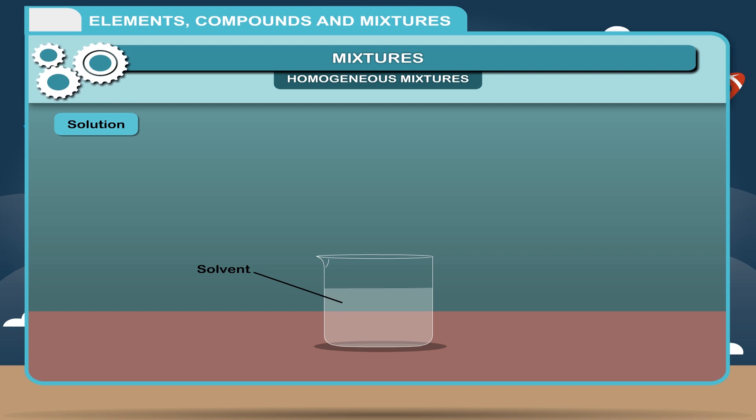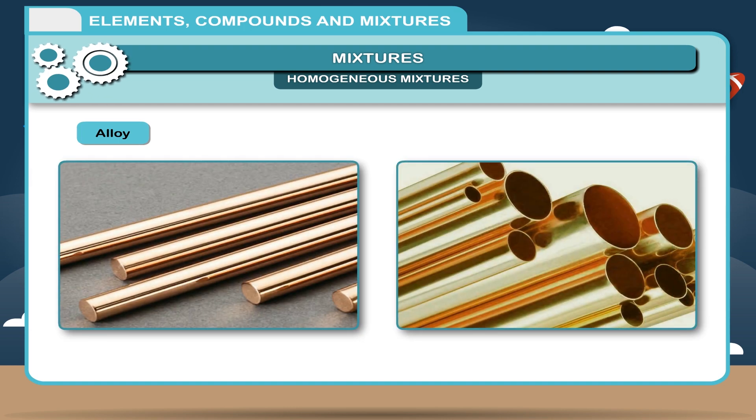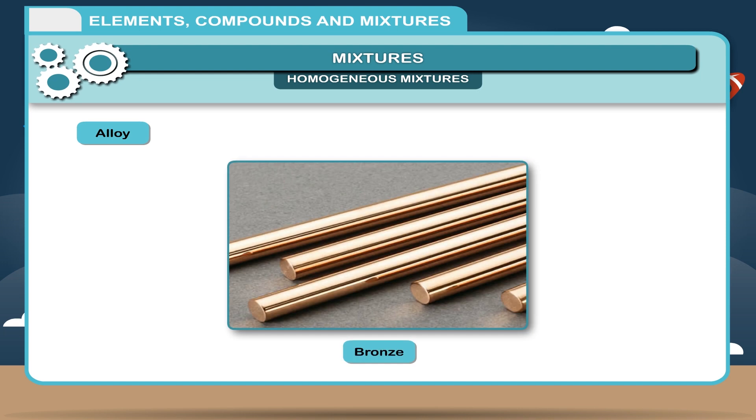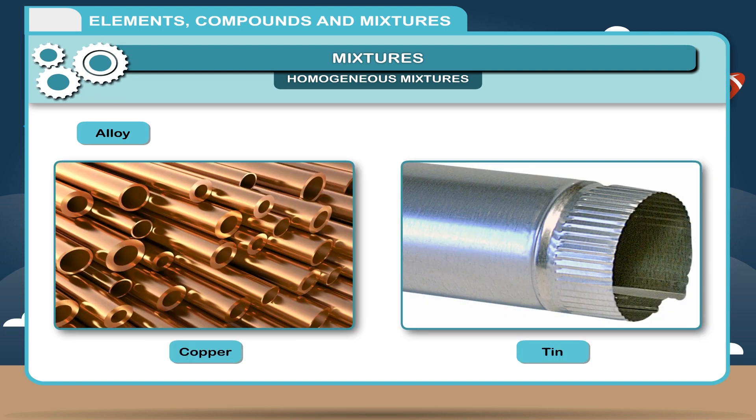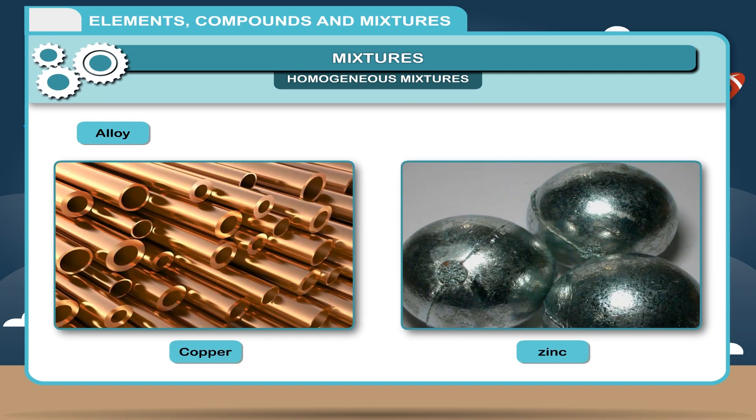Alloy: A homogeneous mixture of two or more metals, or a metal and a non-metal, is called an alloy. For example, bronze is an alloy of copper and tin. Brass is an alloy of copper and zinc.